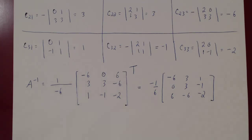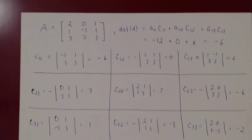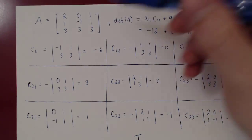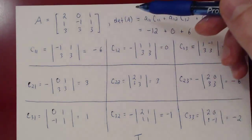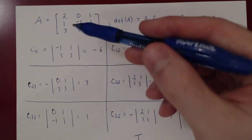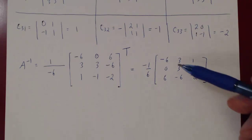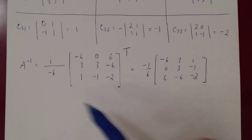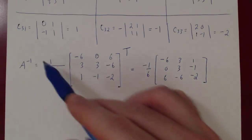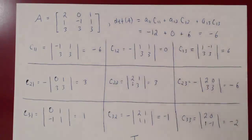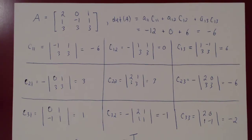You could also check by finding the inverse of A using row reduction — augment A with the identity I, row reduce, and A reduces to I while I becomes A inverse. Or you can check your result by simply multiplying A inverse times A and making sure the result is equal to I.